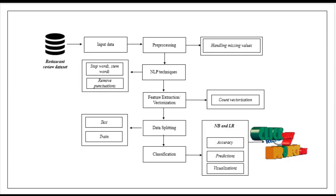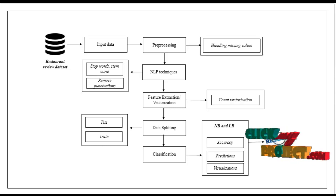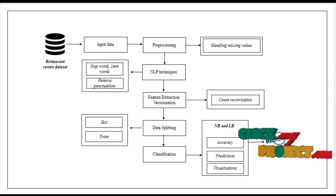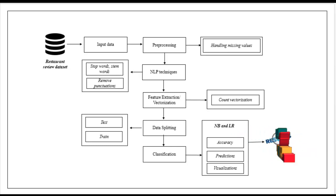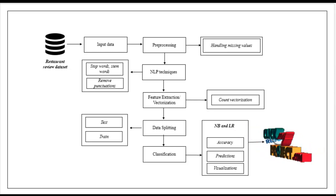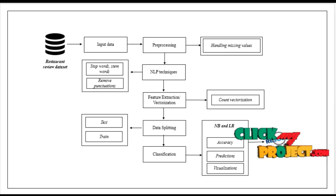This is the flow of our project. First, we have to take the restaurant review dataset. The dataset was collected from dataset repositories like Kaggle, UCI, GitHub and so on. After that, we have to select or feed your input dataset with the help of the pandas package, then carry out the pre-processing step.